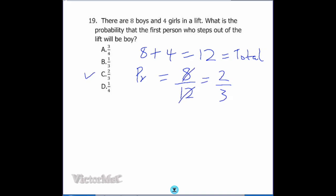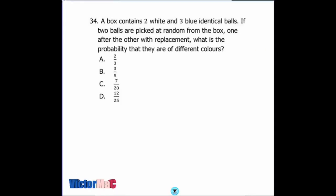Next question on probability: A box contains 2 white balls and 3 blue identical balls. If two balls are picked at random from the box, one after the other with replacement, meaning that when we pick any ball, the total will not be affected at the first and second selection, we'll have 5 intact because we're replacing.